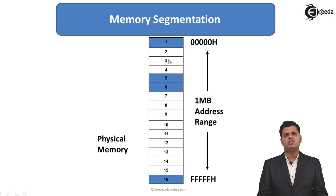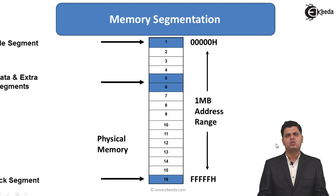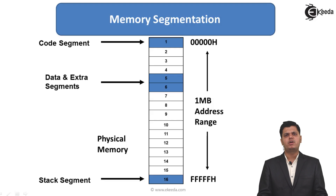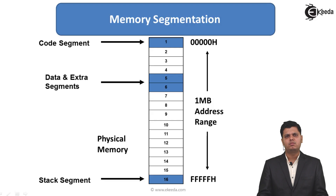Now further we are going to see how the segments are being addressed. In this diagram we have shown segment 1, segment 5, segment 6, and segment 16. Segment 1 is defined as a code segment, segments 5 and 6 as a data segment and extra segment, and segment 16 as a stack segment. As discussed in the introduction of segmentation, we can define these segments in any order.